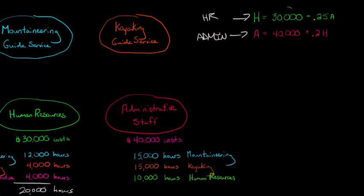So HR costs are equal to 30,000 plus one quarter of A, one quarter of the administrative costs. Why one quarter of the administrative? Well, if we add up the total amount of hours for administrative, it's 40,000 hours. Human resources uses 10,000 of those hours. So one out of four is the same as 0.25. Basically 25% of the administrative staff resources are being used by the HR department.